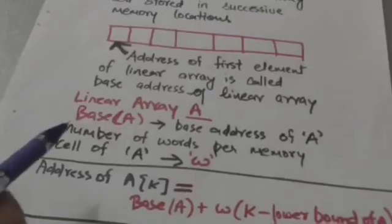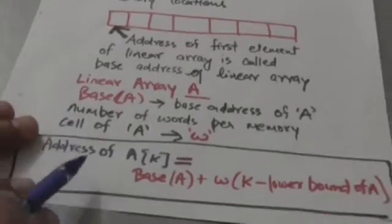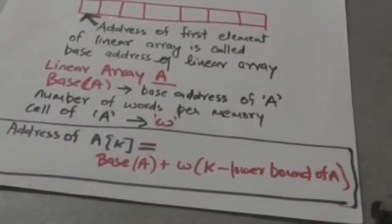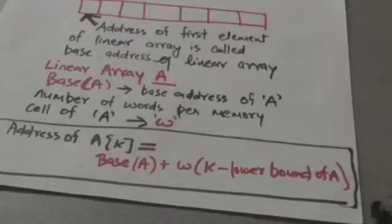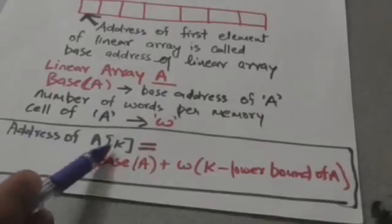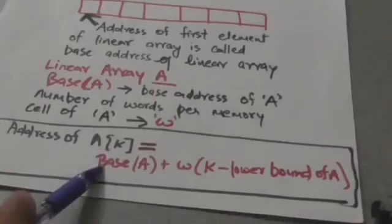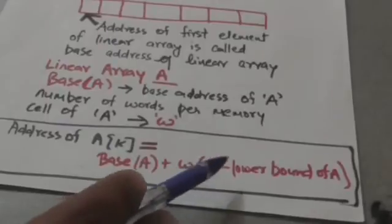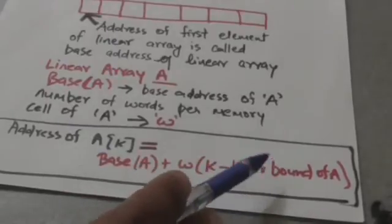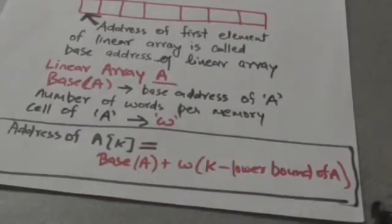Then the address of element A[k] can be calculated by this formula: Address of A[k] equals Base(A) plus w times (k minus lower bound of A).